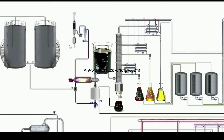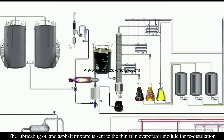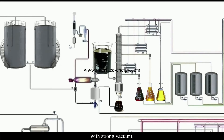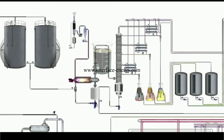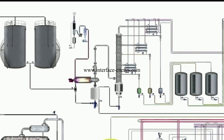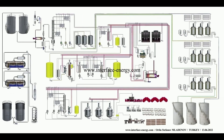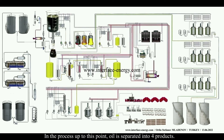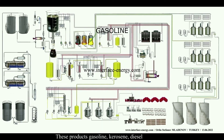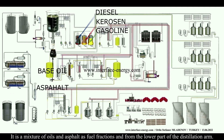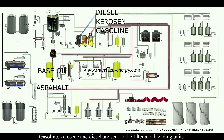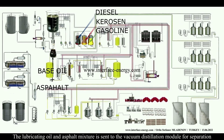Fuels are sent to the filter unit. The lubricating oil and asphalt mixture is sent to the thin film evaporator module for re-distillation under strong vacuum. The oil is separated into four products: gasoline, kerosene, diesel, and a lubricating oil and asphalt mixture. Gasoline, kerosene, and diesel are sent to the filter and blending units, while the lubricating oil and asphalt mixture is sent to the vacuum distillation module for separation.